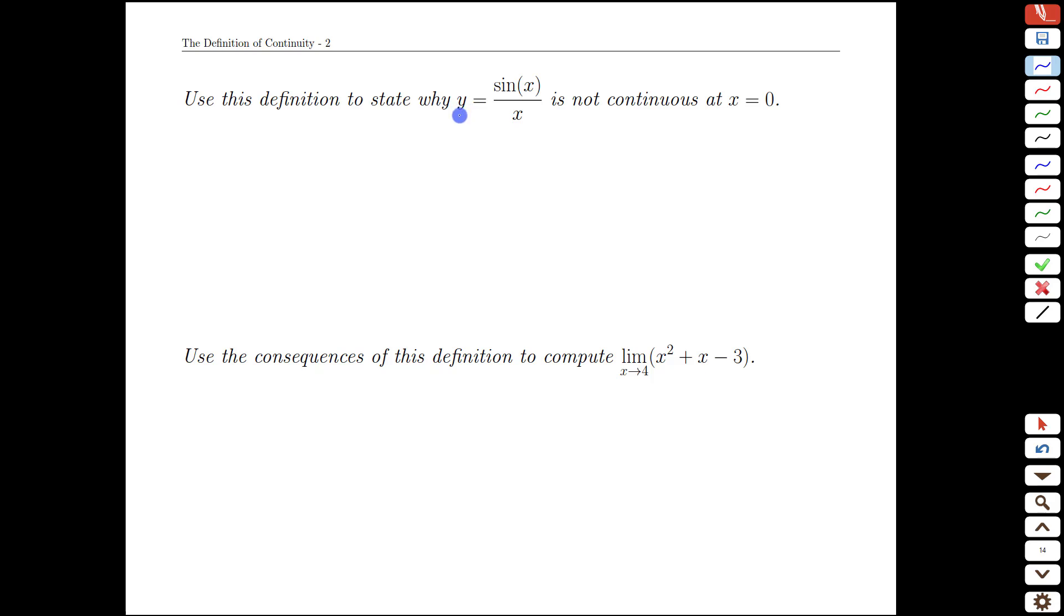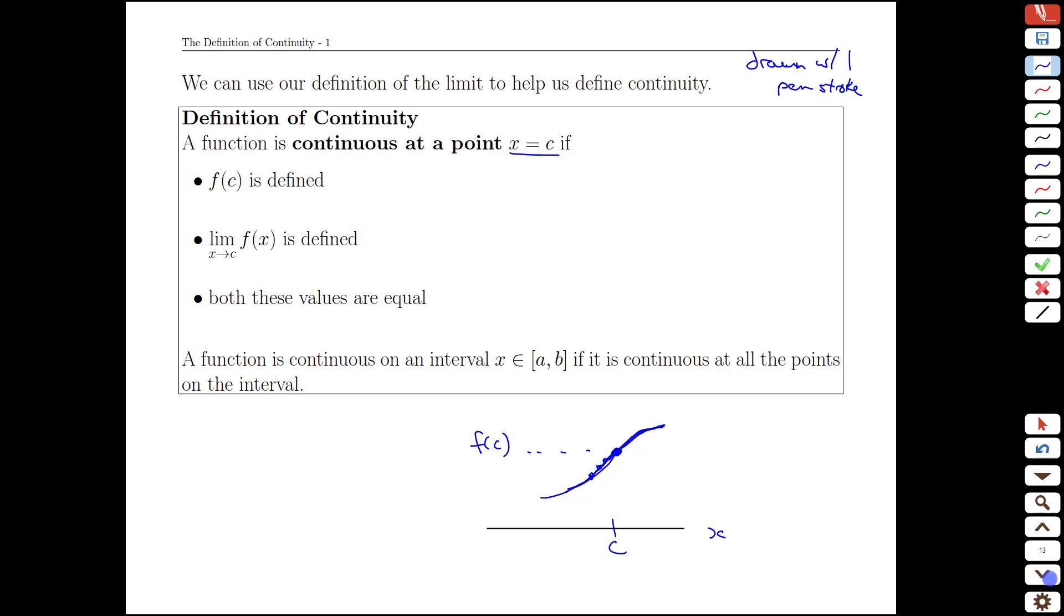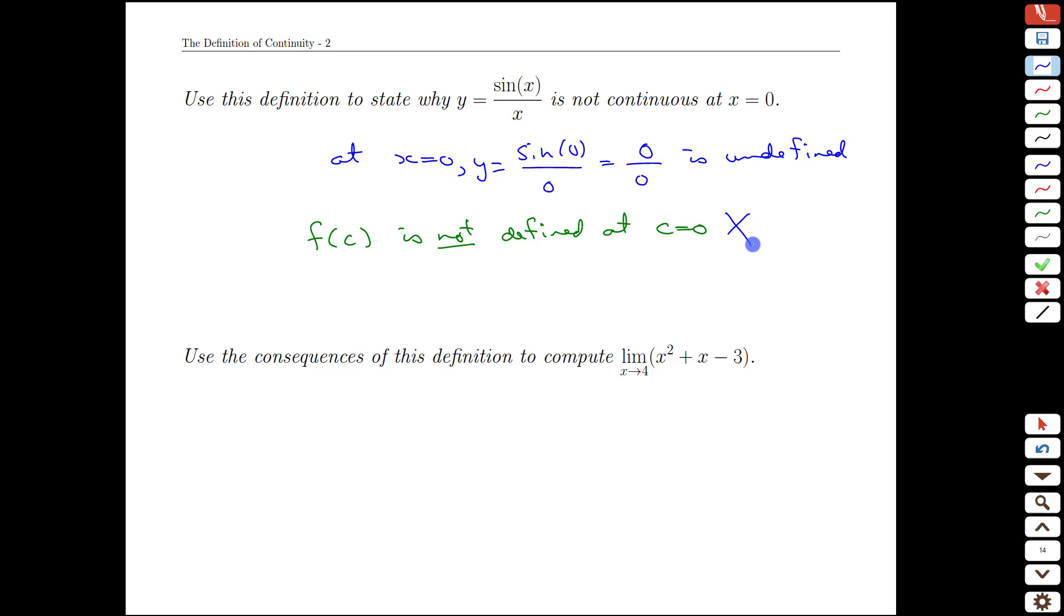Let's take a look at some examples. If we have a function y equals sine x over x, which we've seen before, how do we know it's not continuous at x equals 0? Well, we know that at x equals 0, sine of 0 over 0, which is our y value, 0 over 0. And because we're dividing by 0, that's undefined. In the terminology of the last page, we would say the function value is not defined at c equals 0. And that's the first criterion for continuity. Just going back a slide, we have to have the function defined where we're interested in. In this case here, we don't have the function defined, so the function is not continuous. So sine x over x is not continuous at x equals 0. And we're done.